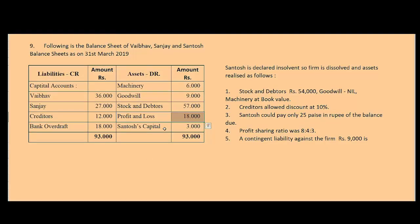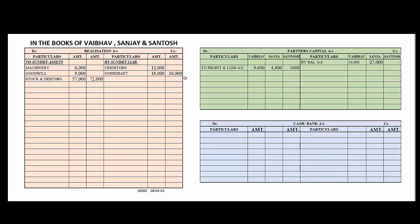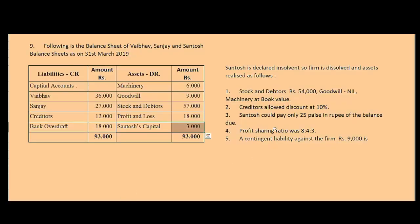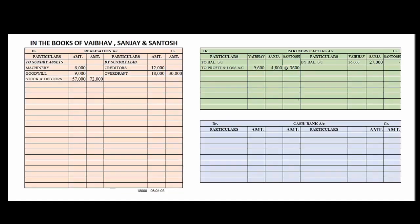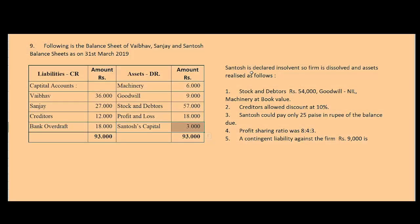Next is Santosh's capital account. Santosh's capital account shows a negative balance — it appears on the asset side of the balance sheet, meaning a debit balance. This balance will go to the partners capital account debit side. Santosh's amount is 3,000. Balance sheet entries are now over; we move to adjustments.